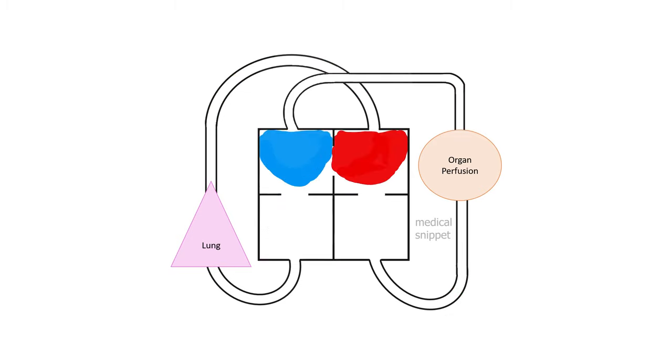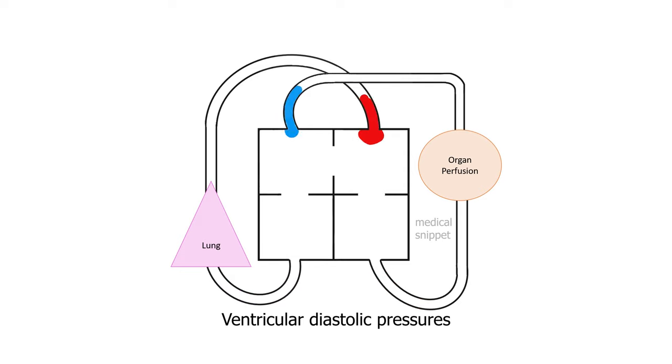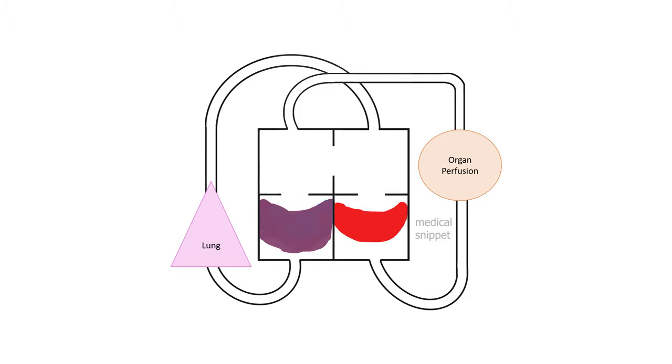The compliance of the ventricle reflects its diastolic pressure. It should be noted that the left ventricular diastolic pressure is about two times that of right ventricular diastolic pressure. As the right ventricle is more compliant and distensible than the left ventricle, the blood from the left atrium flows to the right atrium across the atrial septal defect.